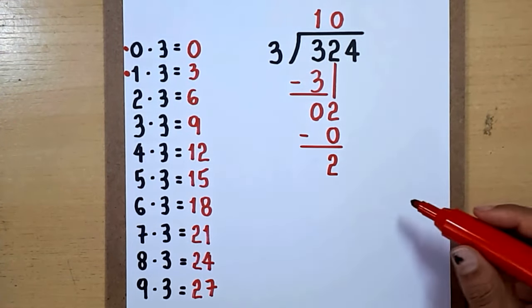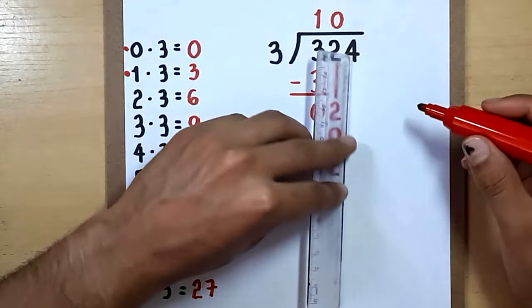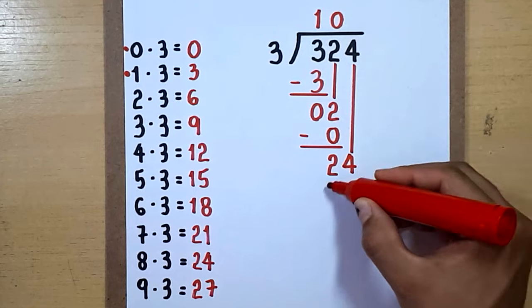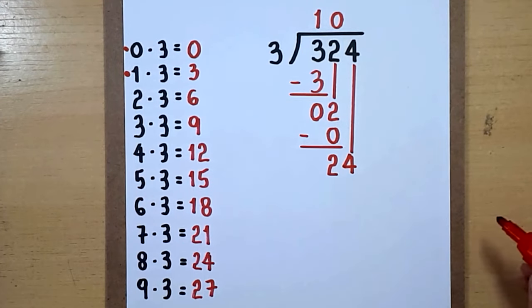After a subtraction we bring down the next digit. It's a 4. What number do we get now? 24. We ask the question: